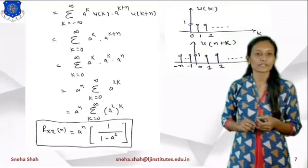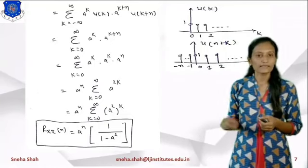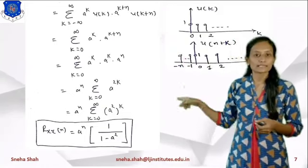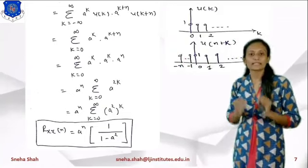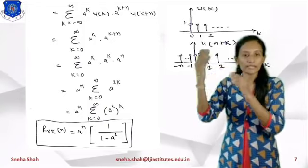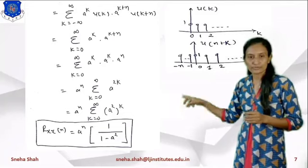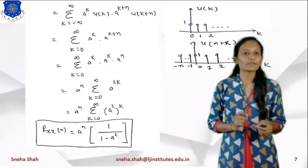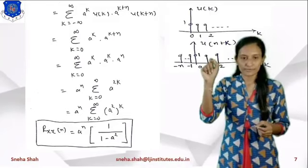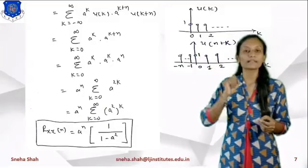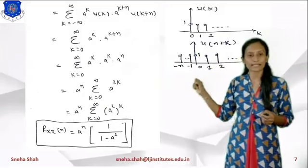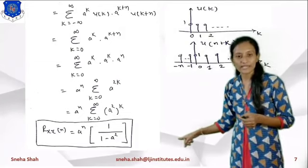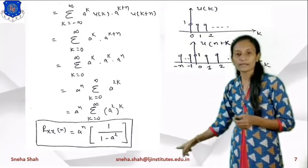So the term converts to: summation k=0 to ∞ of a^k · a^(k+n). Since a^(k+n) = a^k · a^n, and a^n is constant with respect to k, it comes outside the summation. So the term becomes a^n · summation k=0 to ∞ of a^k · a^k = a^n · summation k=0 to ∞ of a^(2k). This can be written as (a²)^k, so capital A = a². Applying the formula: summation n=0 to ∞ of A^n = 1/(1-A). So rxx(n) = a^n · 1/(1 - a²).